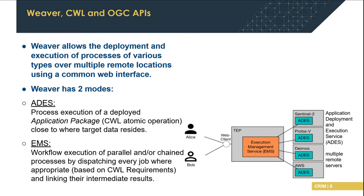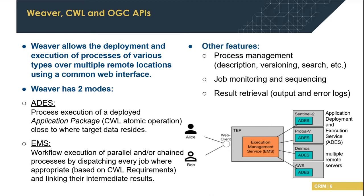As shown in the figure, one EMS-configured Weaver can register with many different remote servers used to process data at different locations. Weaver also provides other features such as process management — getting their description, version management, catalog search, etc. It also provides job monitoring and sequencing for different users and workflows, and result retrieval from both output results of jobs and error logs in the case of failures.